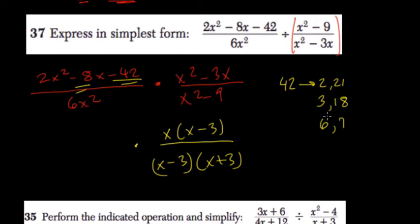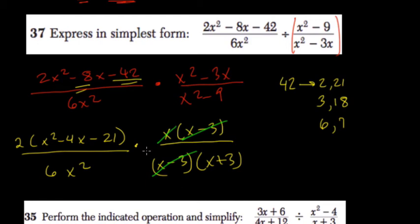So what I would do is factor out 2 first: 2(x² - 4x - 21) over 6x². Some things are starting to cancel out. The (x - 3)s cancel out. We can cross-cancel, so x and x² becomes x, and 2 and 6 become 1/3.